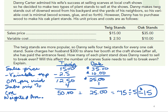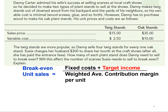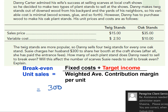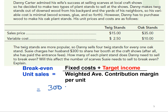We need to determine how many of each stand Danny needs to sell to break even. We have a $15 weighted average contribution margin, so let's plug this into our formula. Break-even sales equal fixed costs divided by the weighted average contribution margin per unit — that's $300 divided by $15 — which equals 20 units in total.